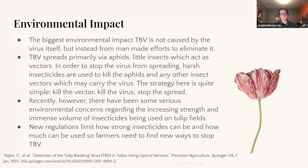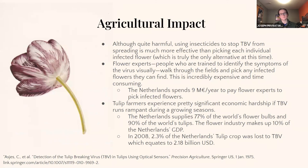Agriculturally and economically, although the harmful insecticides used to stop TBV are very effective, when farmers can't use them, there are huge impacts for flower growers. In the Netherlands, for example, they spend 9 million euros per year paying flower experts to walk through the fields and pick infected flowers. Furthermore, when TBV isn't controlled, they face serious economic hardship. In 2008, 2.3% of the Netherlands' tulip crop was lost to TBV, equating to 2.18 billion US dollars in losses.